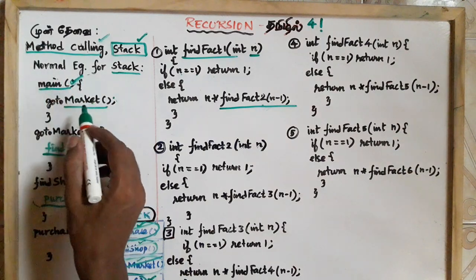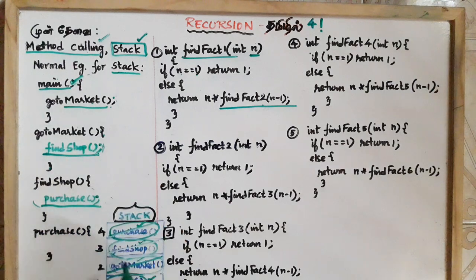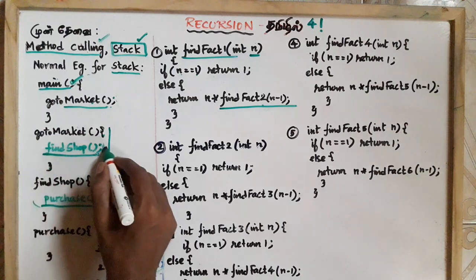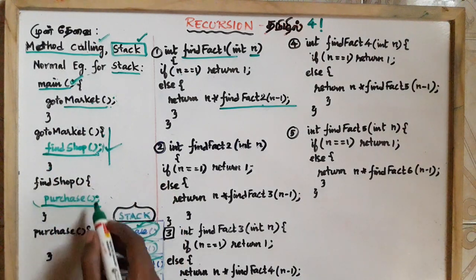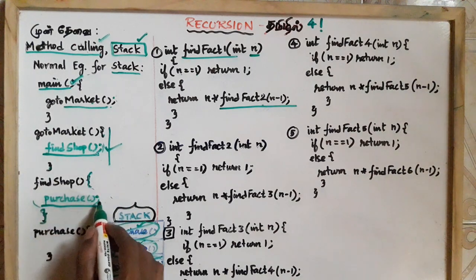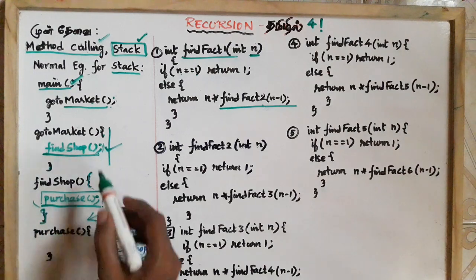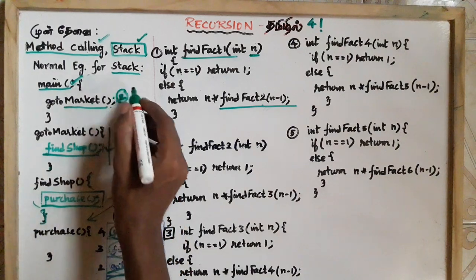The main method is the go-to-market method. What is the go-to-market method? The definition of the go-to-market method is as follows — we can see the definition. Here we will go in and purchase. That is the definition of flow. What is the flow in the stack? The main method calls the go-to-market method.